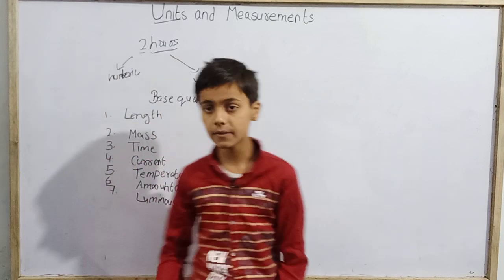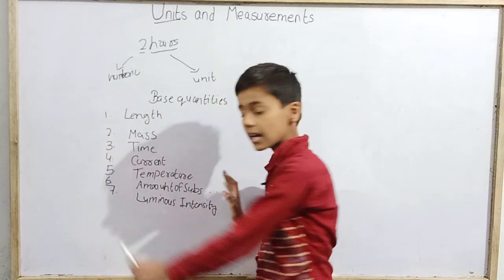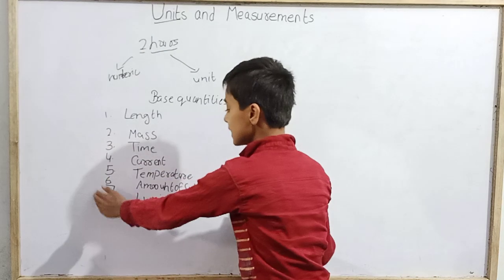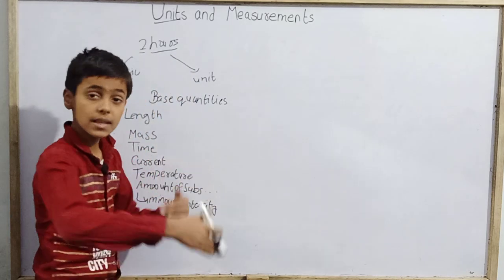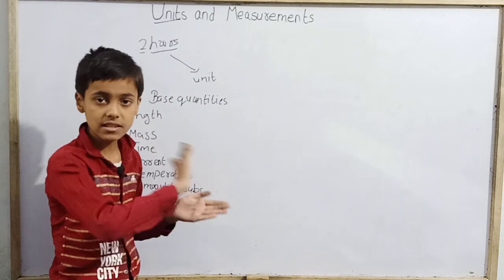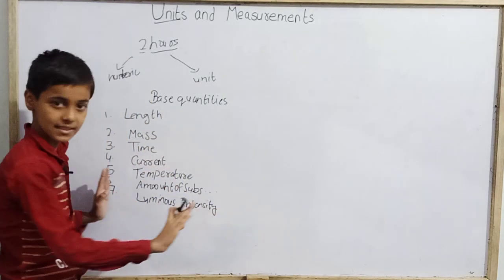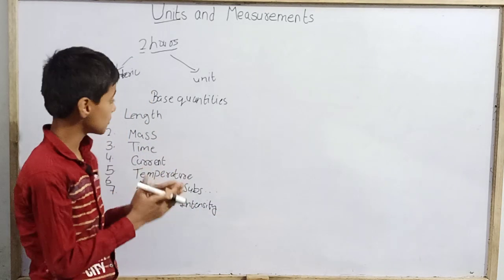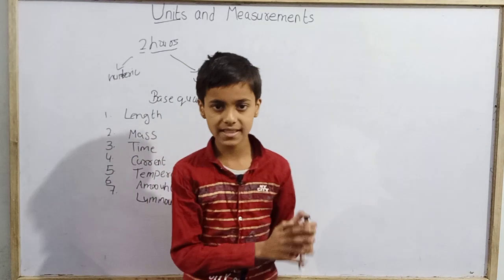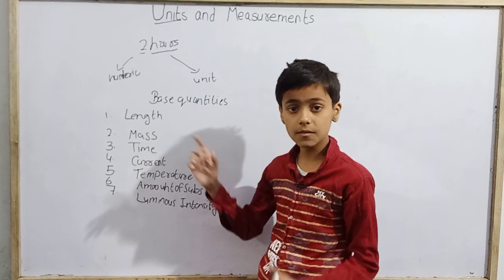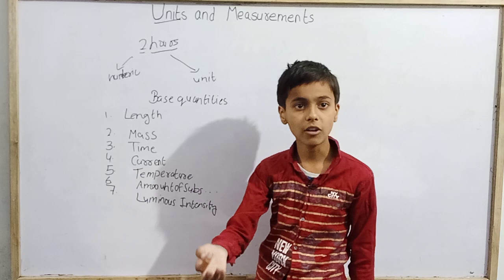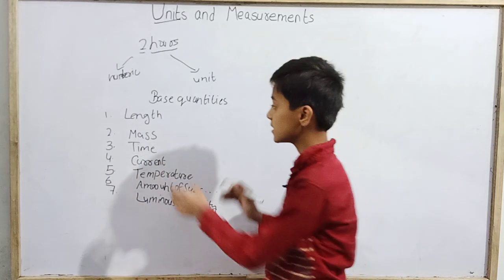In physics we have these 7 quantities which we call fundamental quantities. From these fundamental or base quantities, all other physical quantities in physics can be derived — so those others are called derived quantities. Physical quantities are thus divided into two parts: base quantities and derived quantities.